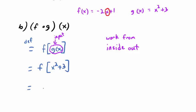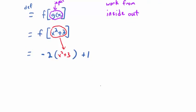A good way to write it is to replace the x in the formula for f with a set of parentheses. So instead of negative 2x plus 1, write it as negative 2 times parentheses plus 1. In that set of parentheses, plug in the new input, x squared plus 3. To simplify, distribute the negative 2. So what does that give me? Negative 2x squared... minus 5.